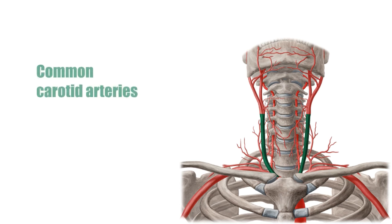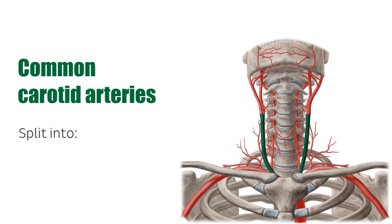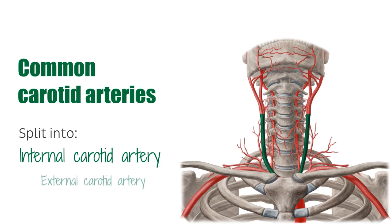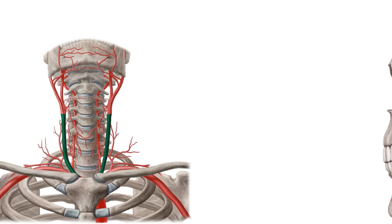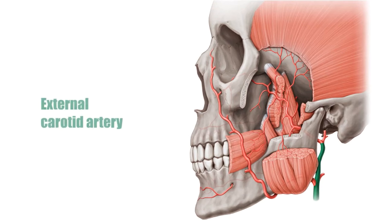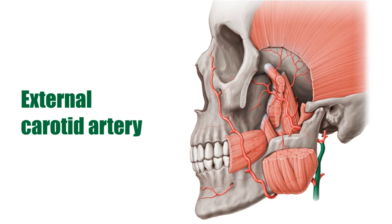The common carotid artery is split into two main branches: the internal carotid artery and the external carotid artery. The external carotid artery is the only division of the common carotid that gives branches to the neck region and supplies the external structures of the head and face. It has eight branches which can be remembered by the mnemonic: "Some Anatomists Like Freaking Out Poor Medical Students." We will work through these arteries in the following slides.